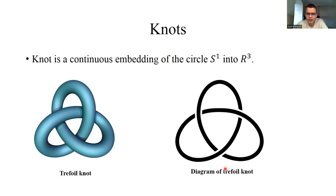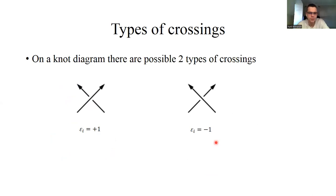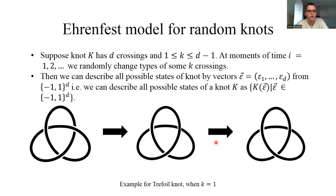There are two possible types of crossings, described by a sign ε ∈ {+1, −1}. We are now ready to formulate the fast model for random knots. Suppose knot K has d crossings. At each time step, we randomly change the types of k crossings, where k ∈ {1, …, d−1}. As illustrated for the trefoil knot, at every moment of time we change the type of some crossings. All possible states of knot K are described by vectors ε from the hypercube {−1,+1}^d.